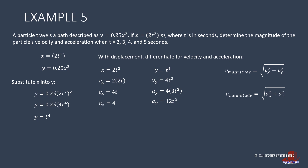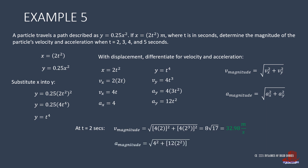Plugging t equal to 2 seconds into both equations, we get the magnitude of velocity as 32.98 meters per second. Acceleration is the root of 4² plus (12 times 2²)², which simplifies to 4 root of 145, or 48.16 meters per second squared.